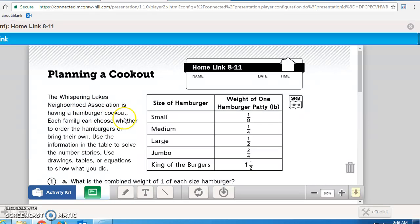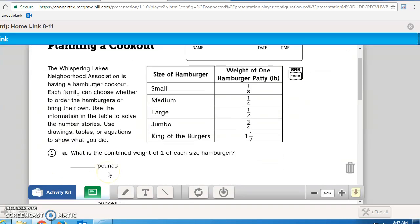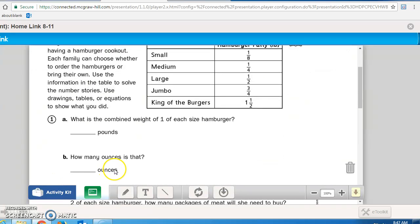This Math Masters reads: The Whispering Lakes Neighborhood Association is having a hamburger cookout. Each family can choose whether to order the hamburgers or bring their own. Use the information in the table to solve the number stories. Use drawings, tables, or equations to show what you did. So I need to see the work that you did to come up with the answer. What is the combined weight of one of each size burger?